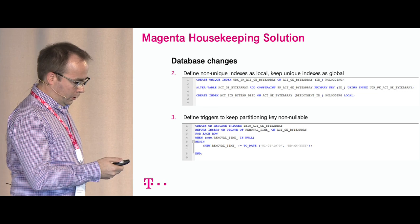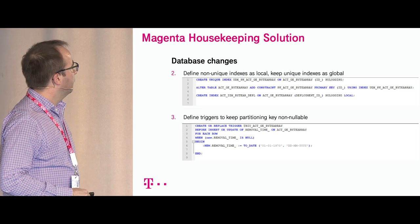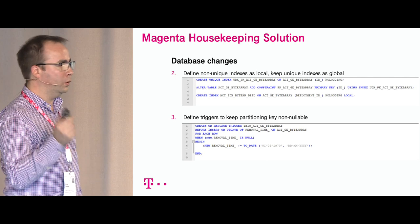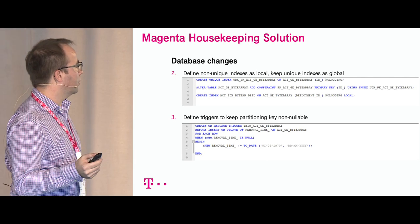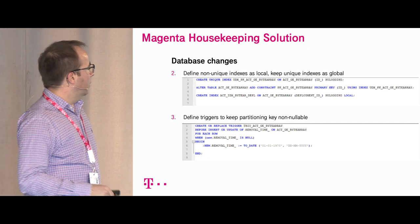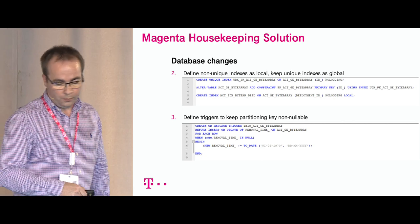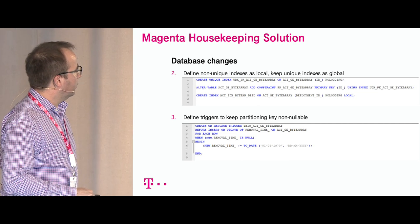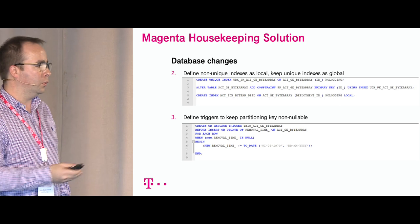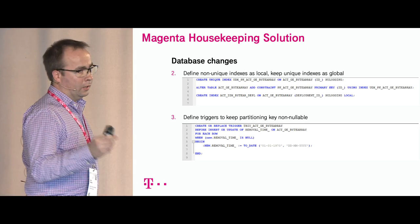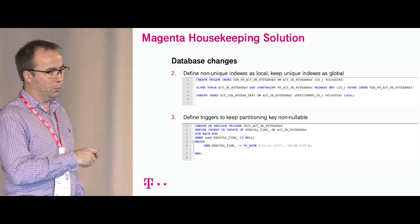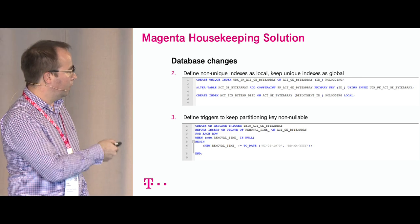We defined indexes: historical tables have unique indexes like a primary key and non-unique indexes. The primary key was left without change; the non-unique indexes were created as local. We also defined a trigger which guarantees that the removal_time will always be populated, because if the removal_time is not populated Oracle does not allow insertion. We found that Camunda itself does not always write the removal_time value, which is why we needed that trigger.